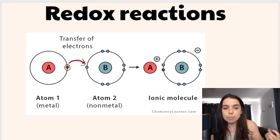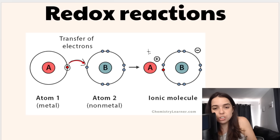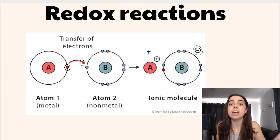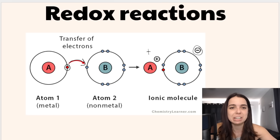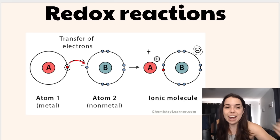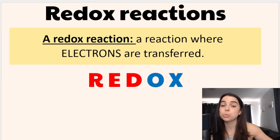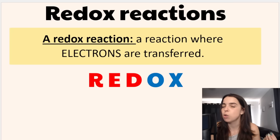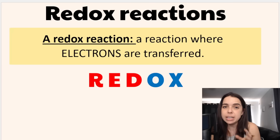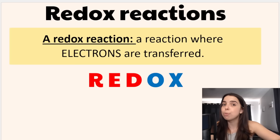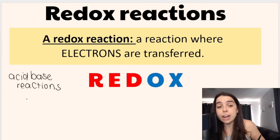Once this happens, we form a positively charged particle and a negatively charged particle, and they attract — that is ionic bonding. Now, redox reactions involve the transfer of electrons, and we can contrast this with acid-base reactions, which involve the transfer of protons or hydrogen ions, H+ ions.